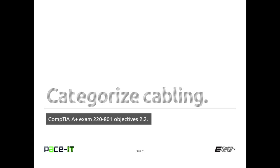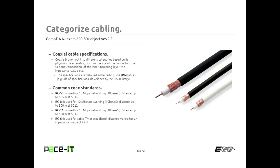Let's move on to objective 2.2, which is categorizing cabling. We're going to talk about coaxial cabling specifications. Coaxial cabling is broken out into different categories based on physical characteristics such as the size of the conductor, the composition of the insulating layer, and its impedance value. That impedance value determines what type of terminator goes on the end. The specifications come from the radio guide tables — the RG tables — which were a specification developed by the U.S. military.